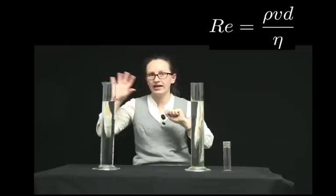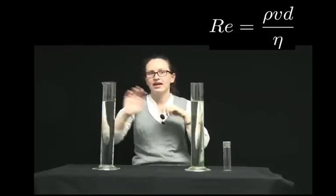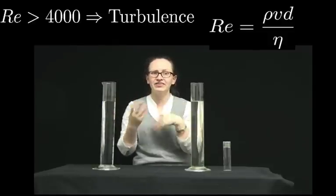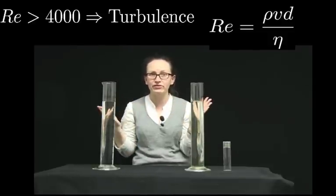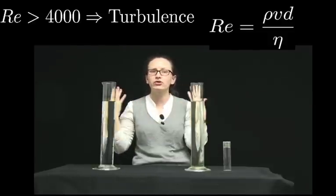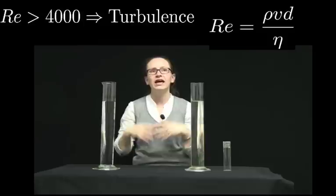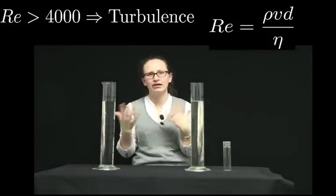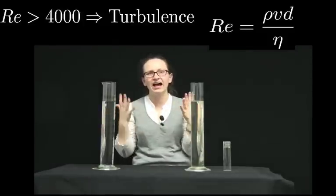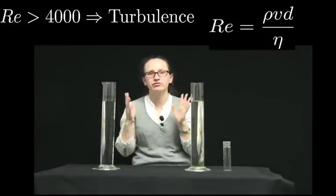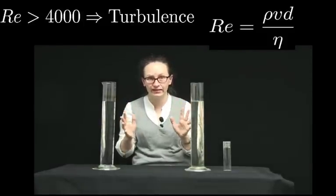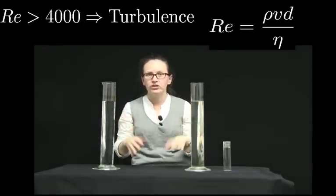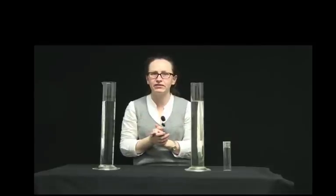When the Reynolds number gets up above 4,000, we've got completely turbulent flow, and we can't really apply our equations for ideal fluid flow anymore.